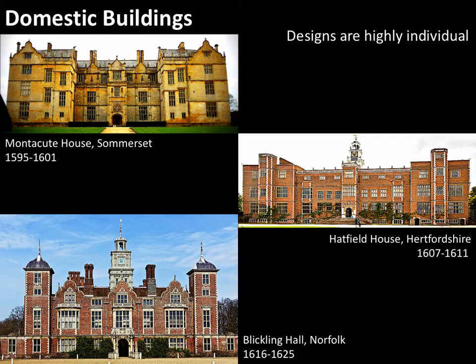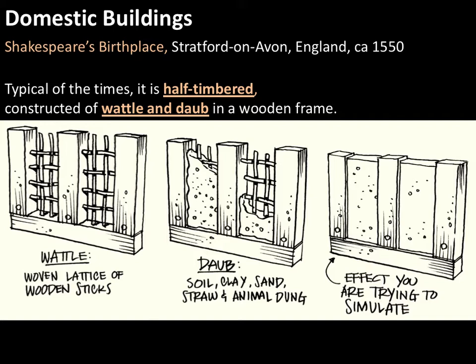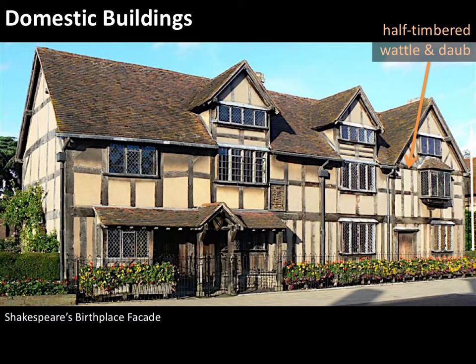Let's move along to looking at the domestic buildings of the upper middle class. Let's take a look at Shakespeare's birthplace in Stratford, England. This building features an iconic Tudor-Elizabethan look called half-timbering, which is constructed from wattle and daub in a wooden frame. The wattle is that woven lattice of wooden sticks within the wooden frame, and the daub is soil, clay, and sand — a mud-like material hand-patted into and around the wattle. You end up with a building that looks like this: that look of plaster within the wooden beams and posts is what's called half-timbering.